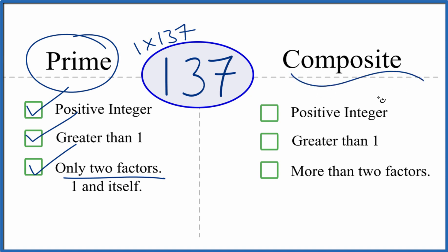But is it composite? Well, it's a positive integer. It's greater than 1. And are there more than two factors? Nope. We just said there are only two factors. So there's not more. That means it's not a composite number.